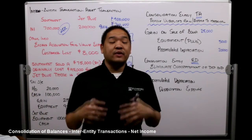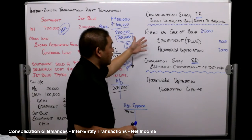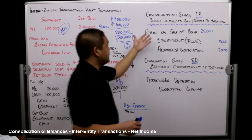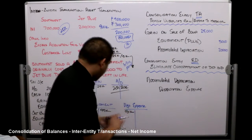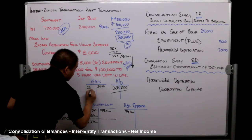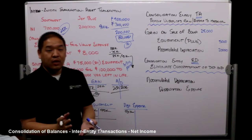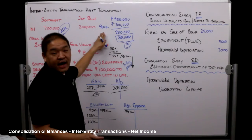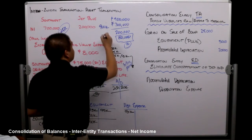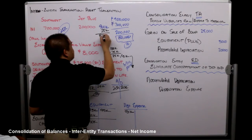We've got to remove the gain, so we debit gain for $25,000 — the gain is now zero, we don't have a gain anymore. What does that do to the $900,000? If we eliminate the gain, we drop it by $25,000, bringing us to $875,000. We're not done yet — we've still got the other piece of this entry.